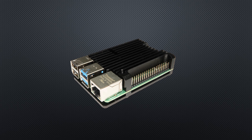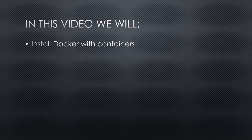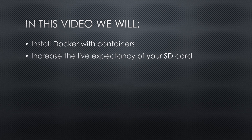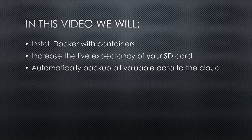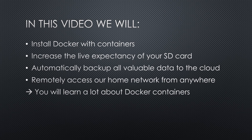Having a Raspberry Pi as a home server is an excellent addition to our IoT setup. But setting it up takes a lot of time and know-how. What if we could use the most modern tools to reduce this effort? Let's try it by installing Docker with many containers like Mosquitto, Node-RED, Grafana, InfluxDB and others. We'll also increase SD card life expectancy, automatically backup to Dropbox, and set up Pi VPN for secure remote access. You'll also learn a lot of useful things about Docker and containers. Let's start.